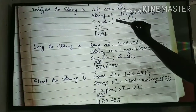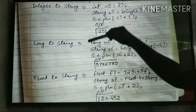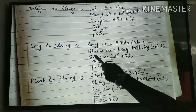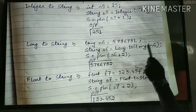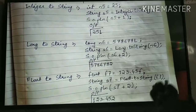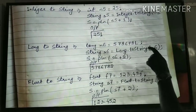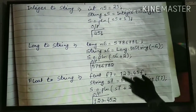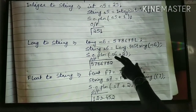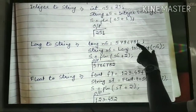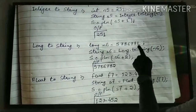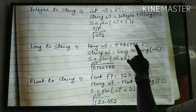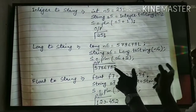Similarly for long to string: long n6 = 578678, and String s6 = Long.toString(n6). The method toString converts the long into string type. So s6 plus 2 will again do concatenation — it will not add numerically, but fix the 2 at the end. So after 8, the 2 gets concatenated. The L in the output is for long type, so ignore that L.